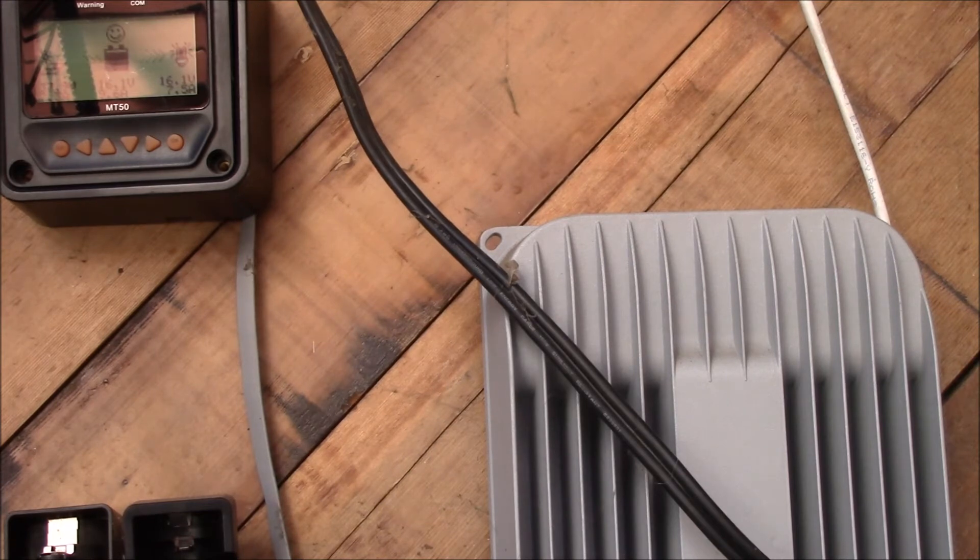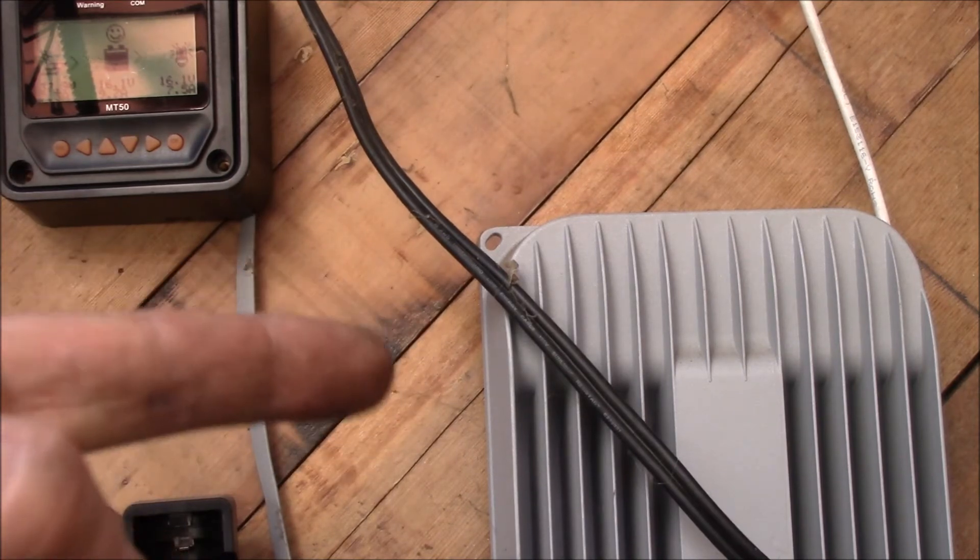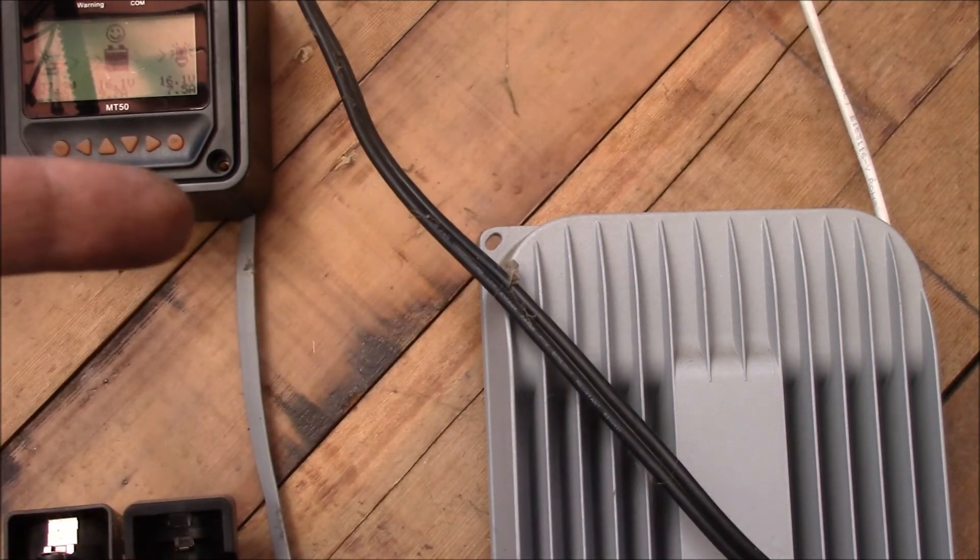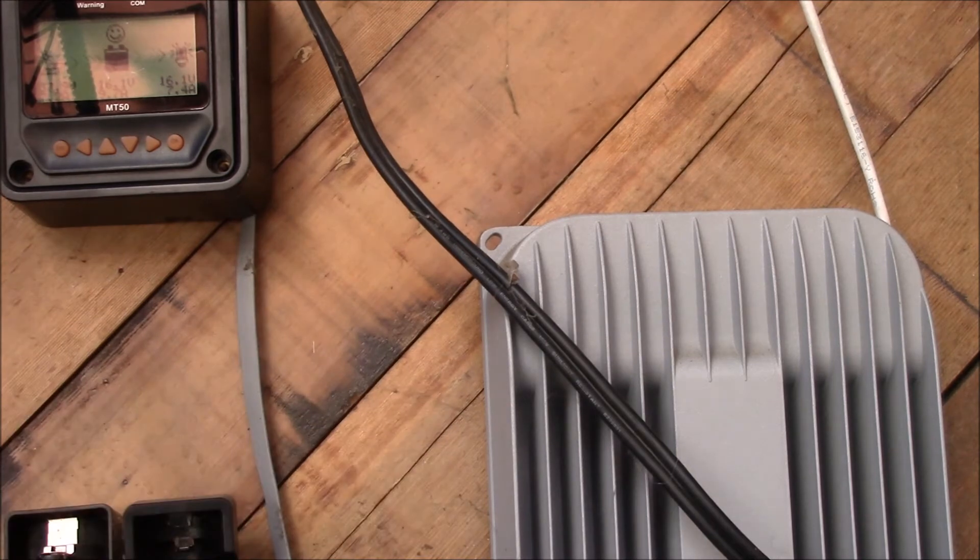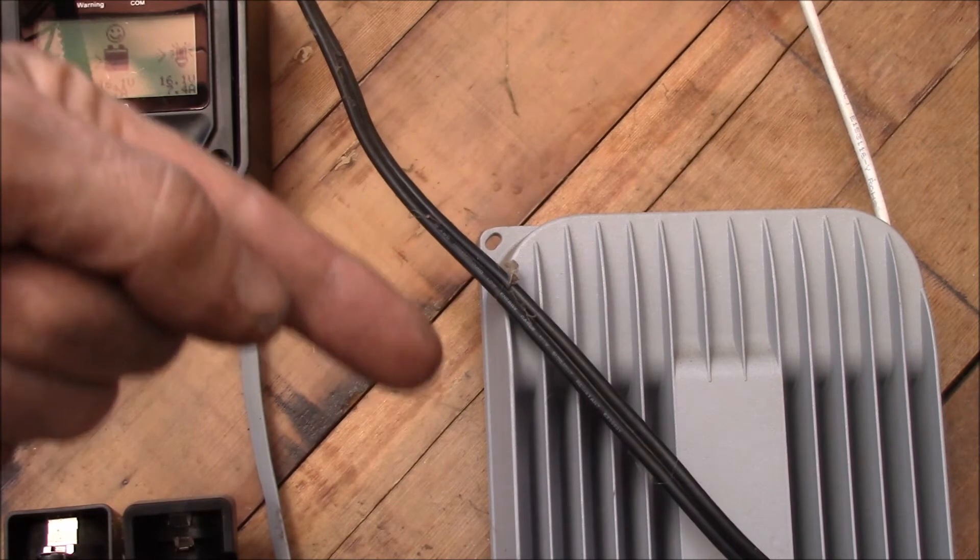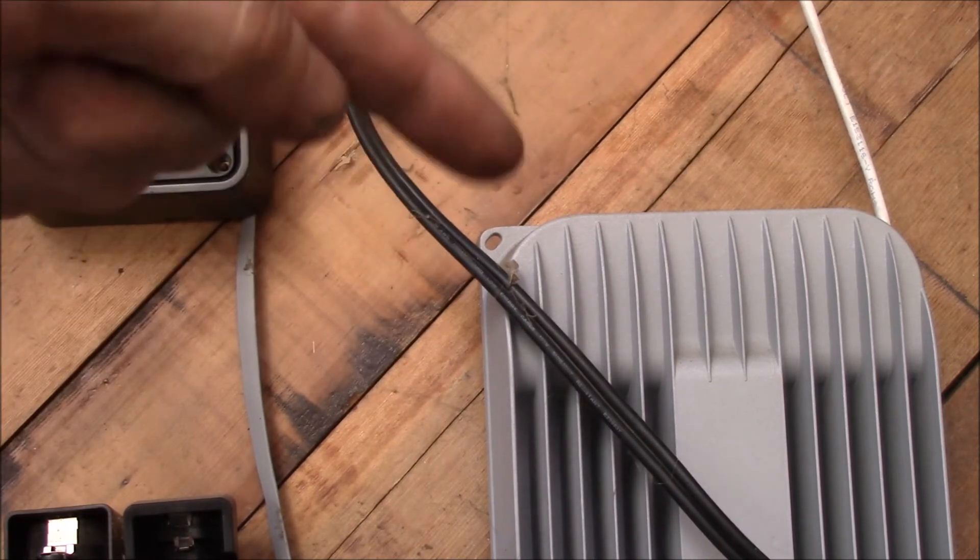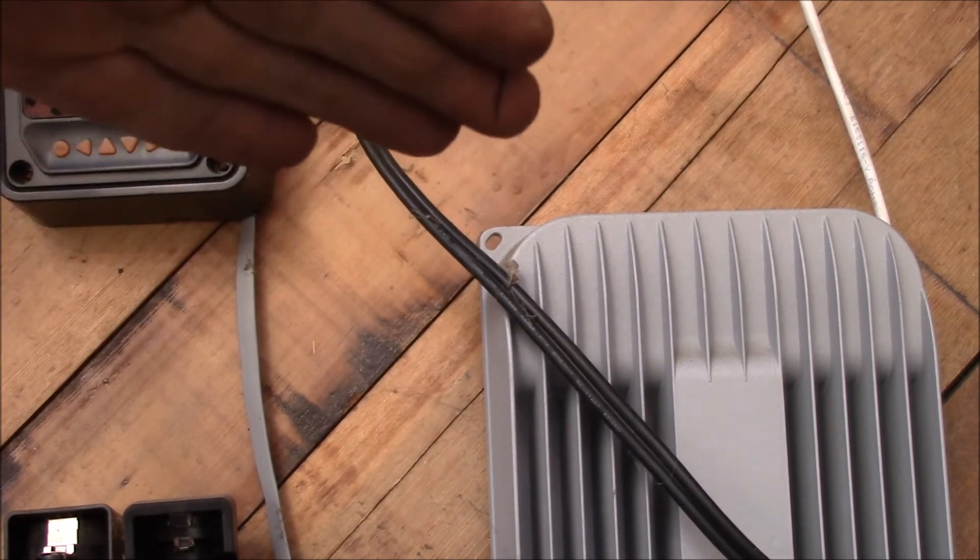I have been running this with two panels in series and I find this charge controller doesn't seem to handle the series panels as well. It seems to get a little confused as far as the MPPT function. If you reset it, it'll go up to like 70 volts, which is the open circuit on the old panels.